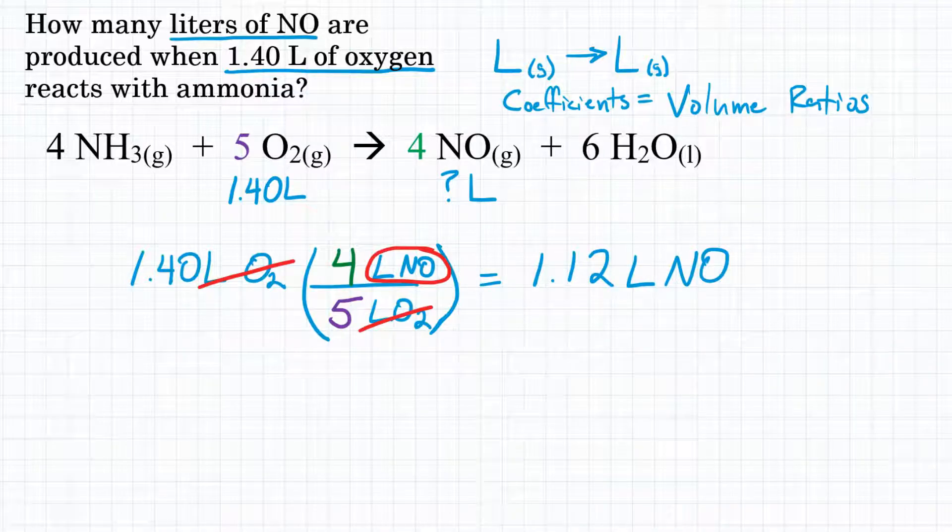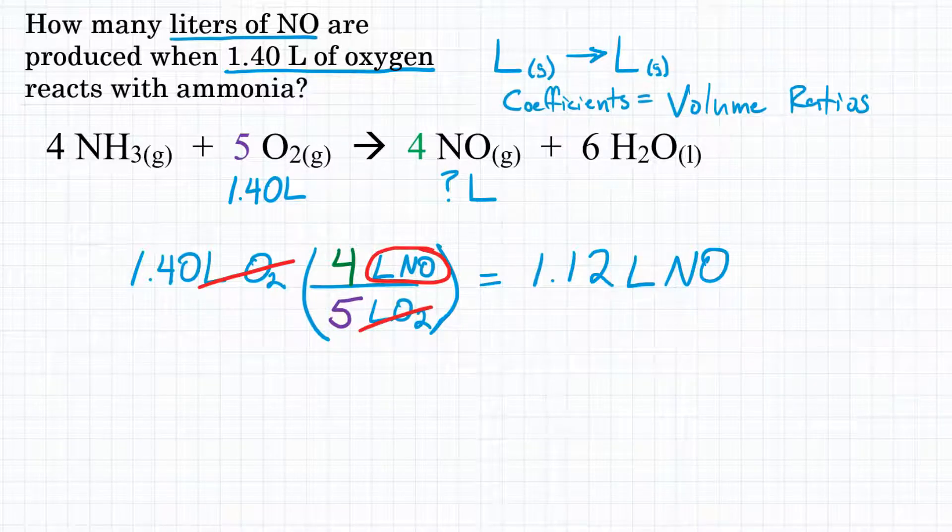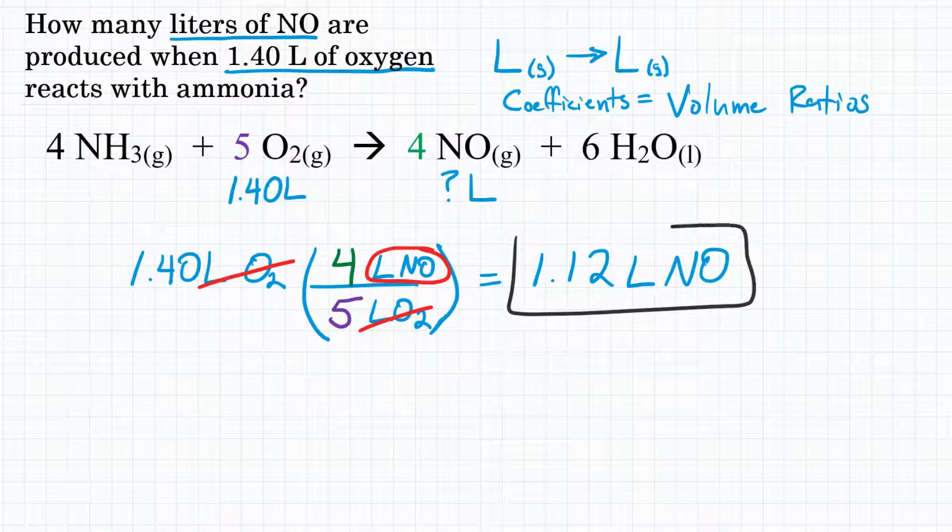So final answer: how many liters of NO are produced when 1.40 liters of O2 reacts with ammonia? That would be 1.12 liters of NO.